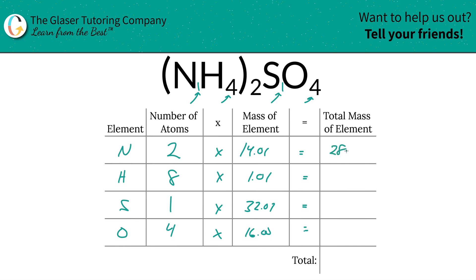All right, and so 14.01 times 2 is 28.02, and this works out to be 8.08, this works out to be 32.07, and this works out to be 64. And then to find the total mass in the compound, it's fairly straightforward now. All you got to do is add this column up, and that's really what we're interested in here: 132.17, and the units there are in amu.